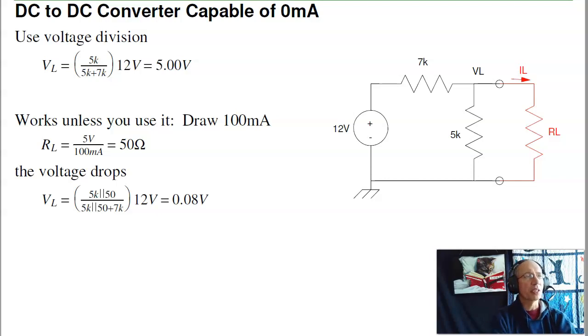Now there's a couple ways to do it. The most straightforward way is to use a voltage divider. That's something we've already looked at. For example, if I want to take a 12 volt source and drop it down to 5 volts, I could just use two resistors. That'll give me 5 volts at VL. This works. This converts 12 volts down to 5 volts.